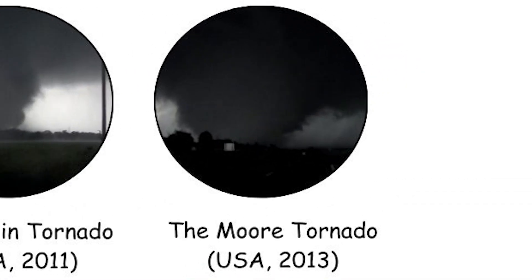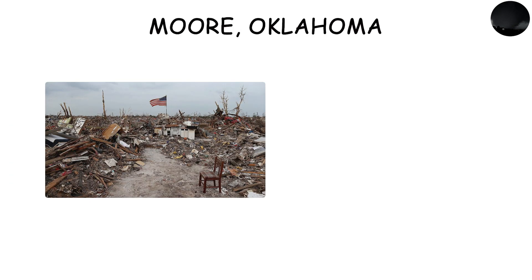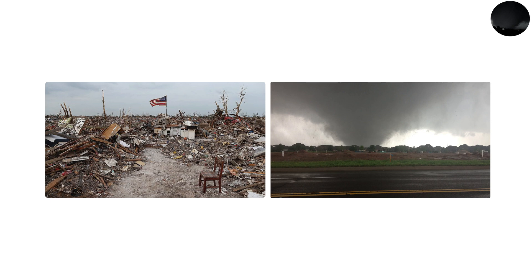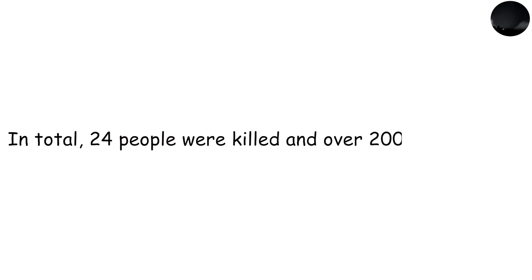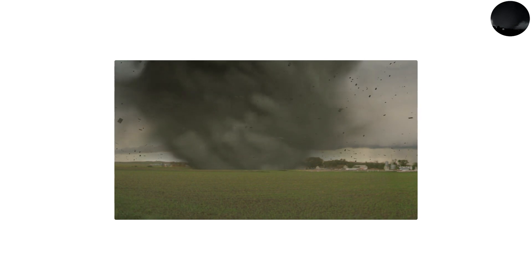The Moore Tornado, USA, 2013. On May 20, 2013, the town of Moore, Oklahoma, was struck by an EF5 tornado that reached wind speeds exceeding 210 miles per hour. In total, 24 people were killed and over 200 were injured. The tornado was over a mile wide at times and stayed on the ground for 17 miles, carving a swath of destruction through residential neighborhoods and public buildings.